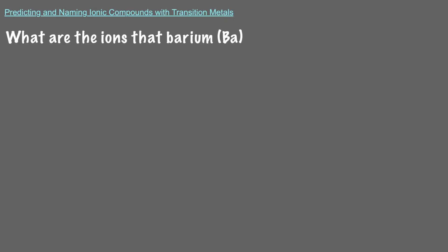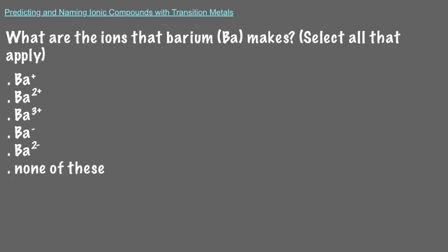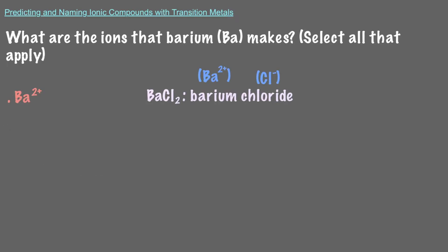What are the ions that barium makes? That's right, barium is an alkaline earth metal, and so it will always make a cation with a positive 2 charge. So BaCl2 is barium chloride. We know that barium ions are always positive 2, and we will always have 2 chloride ions in the neutral ionic compound.